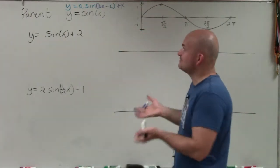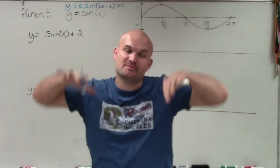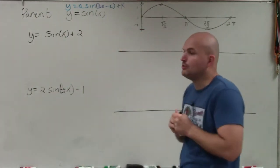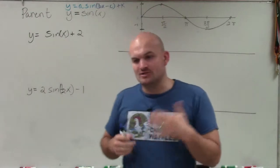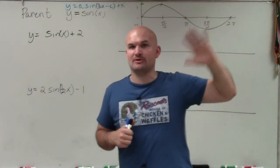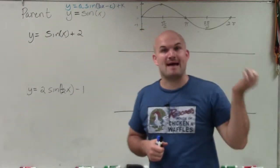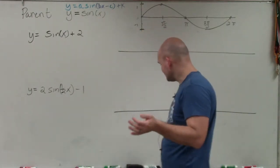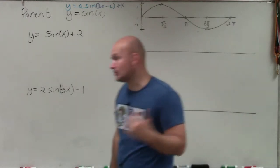If k is positive, that means we're going to be shifting the graph up. If k is negative, that means we're going to be shifting the graph down. And what I always thought was so important as far as amplitude is knowing that the amplitude is not always the distance of how far you go up or down the graph, but it's the half distance between our maximum and our minimum point, because things are going to change as we are going to see.